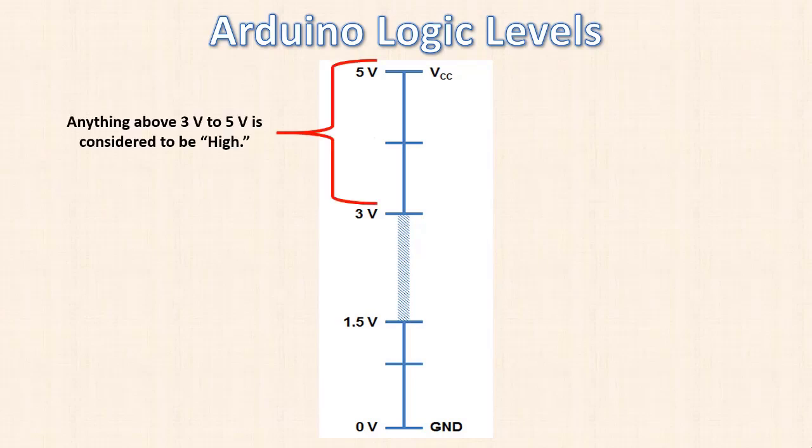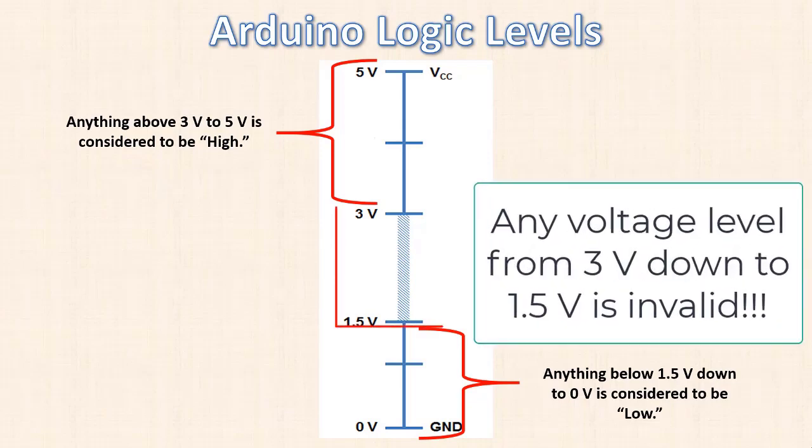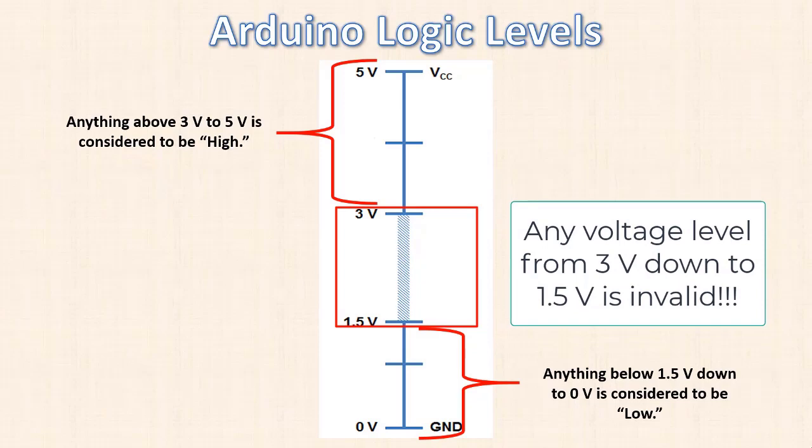For Arduino, a valid high logic level is anything above 3 volts up to 5 if we're using the 5-volt power supply. A valid low is anything below 1.5 volts down to 0. Anything in between that is considered invalid. And if we try to input an invalid logic level to the Arduino, weird, unpredictable things can happen. Maybe the Arduino will freak out or something.